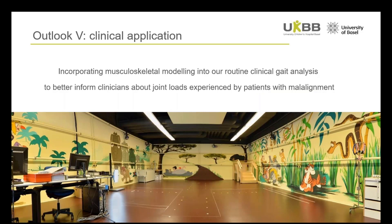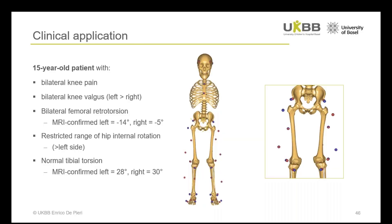Finally, I would like to show how we are incorporating musculoskeletal modeling into our routine clinical analysis to better inform clinicians about joint loads experienced by patients with malalignment. I will present results for a patient who visited our gait lab at the Children's Hospital in Basel — a 15-year-old who sought orthopedic consultation due to lingering bilateral knee pain. Upon examination, a bilateral knee valgus more pronounced on the left side was diagnosed. MRI confirmed bilateral femoral retrotorsion associated with a restricted range of internal hip rotation, particularly on the left side, while tibial torsion was within normative values.